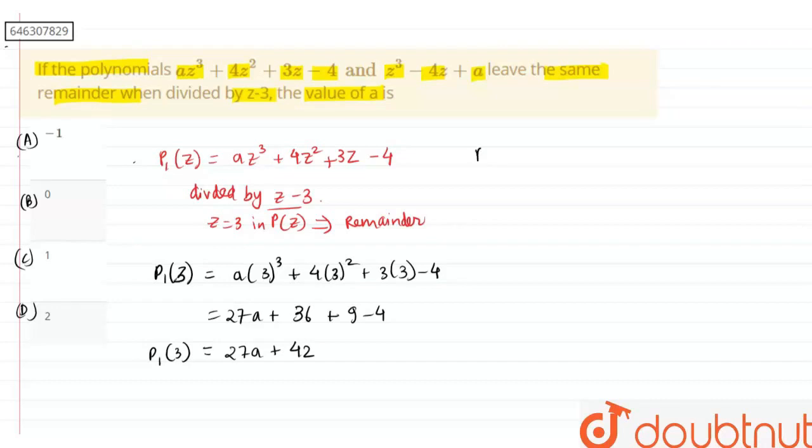Now, similarly applying for the second polynomial that is z³ - 4z + a, we are going to put z = 3 again here. This becomes 3³ - 4 times 3 + a. So this gives 27 - 12 + a, and this is 15 + a which is p₂(3).